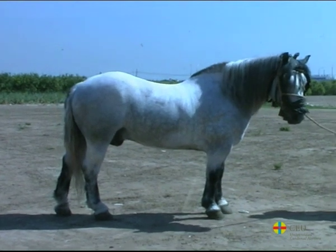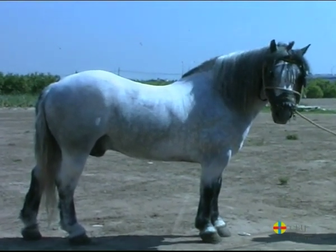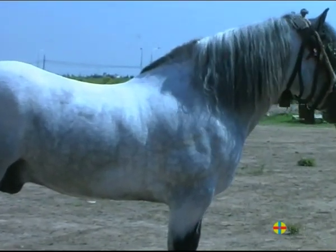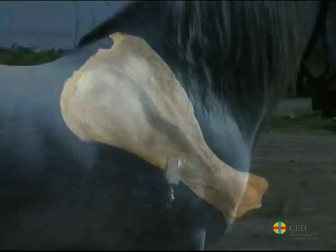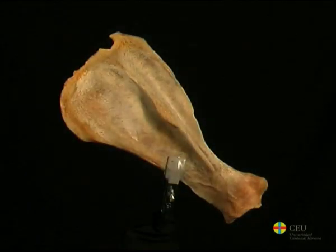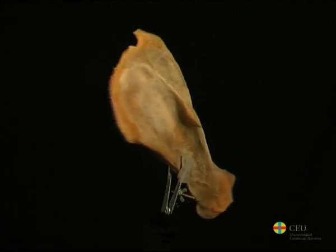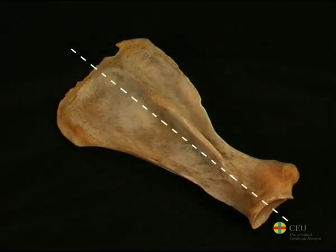The scapula is a flat bone located in the thoracic region of mammals and lies against the craniodorsal part of the thoracic wall. In domestic mammals, it associates with the trunk muscles but does not form a true articulation. It has a triangular shape with two surfaces, three edges, and three angles, with the longitudinal axis located obliquely. Its ventral angle articulates with the humerus.